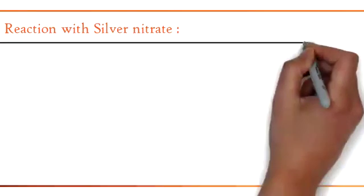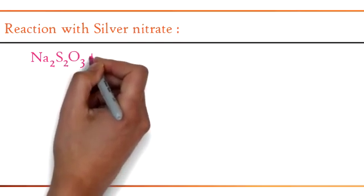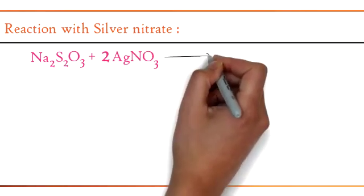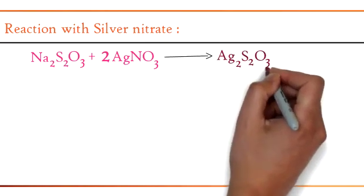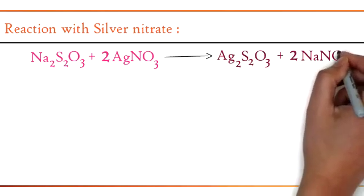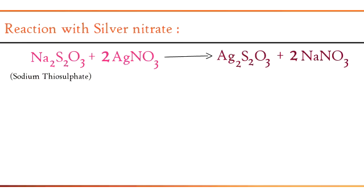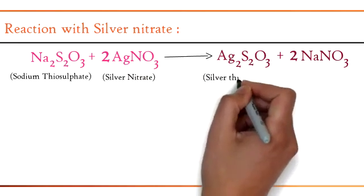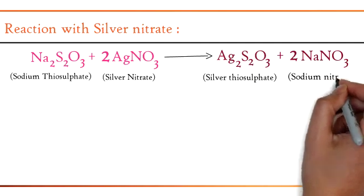Next, reaction with silver nitrate. Na2S2O3 + 2AgNO3 → Ag2S2O3 + 2NaNO3. Sodium thiosulfate on reacting with silver nitrate produces silver thiosulfate, which is white in color, and sodium nitrate.